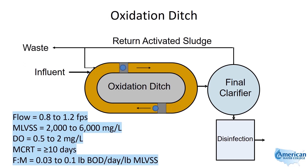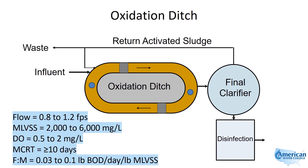Any time an adjustment is made, the operator should allow several days for the process to stabilize before making an additional change. The mixed liquor in the oxidation ditch should have a medium to dark brown color. Typically, the sludge age is greater than 10 days, and the system operates with a very low F to M ratio in the range of 0.03 to 0.1 pounds of BOD per day per pound of mixed liquor volatile suspended solids. This makes it a very stable process.